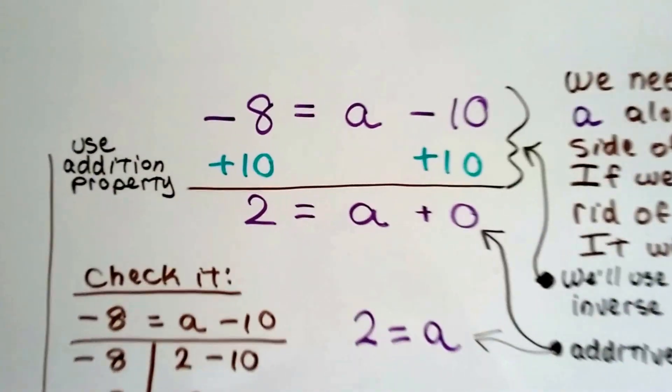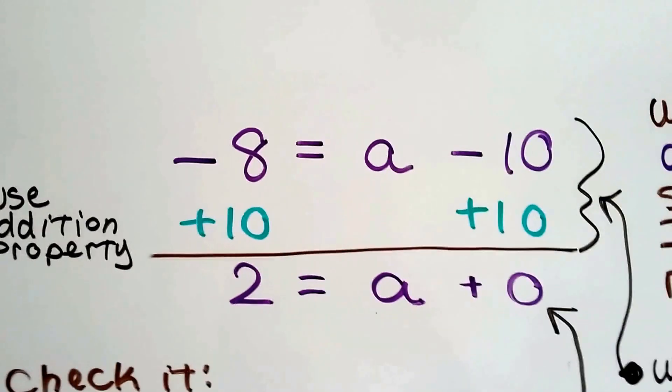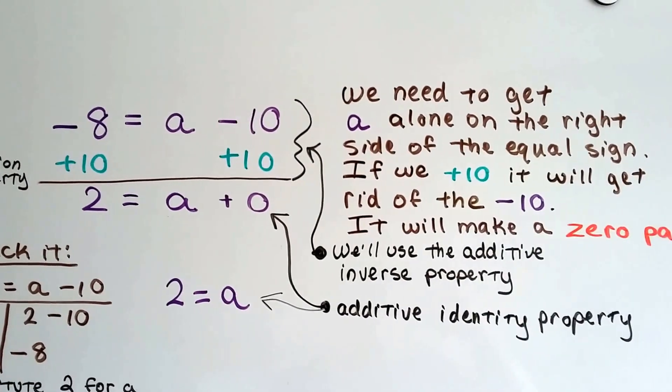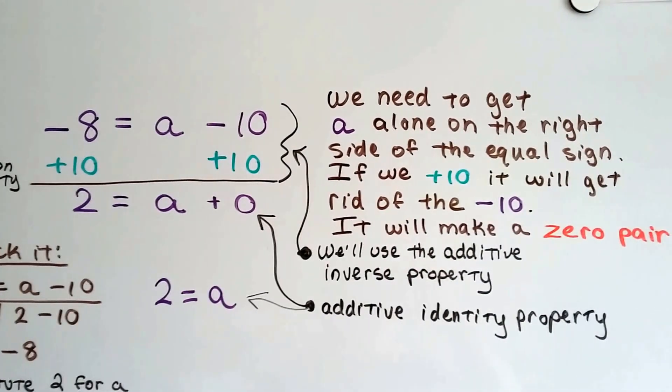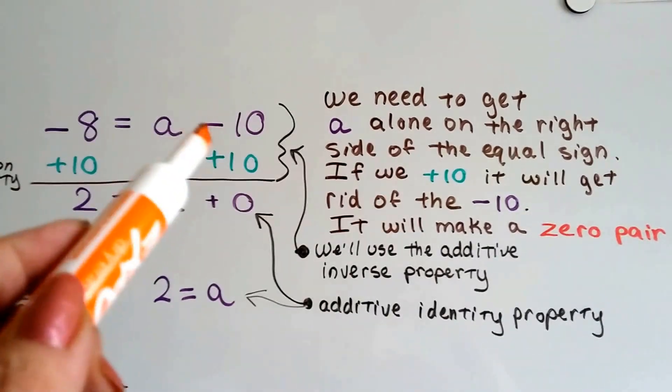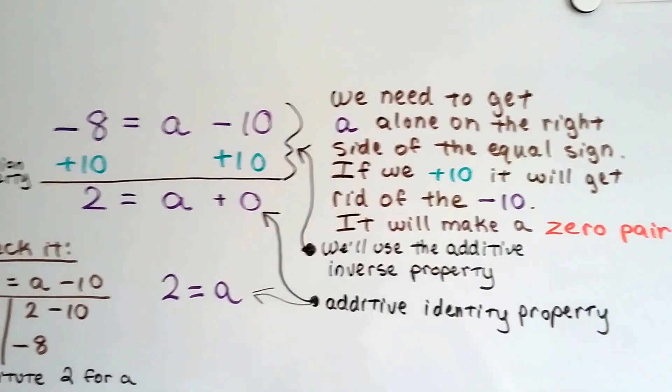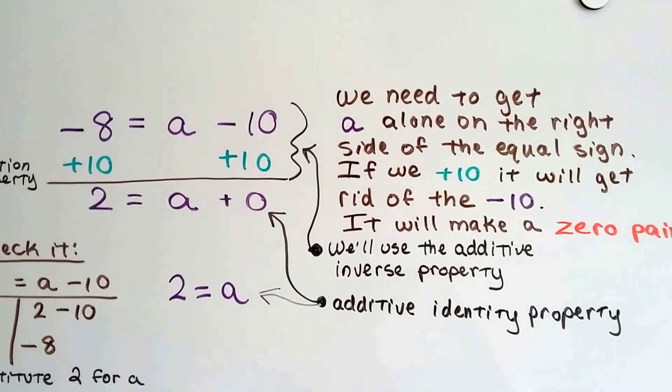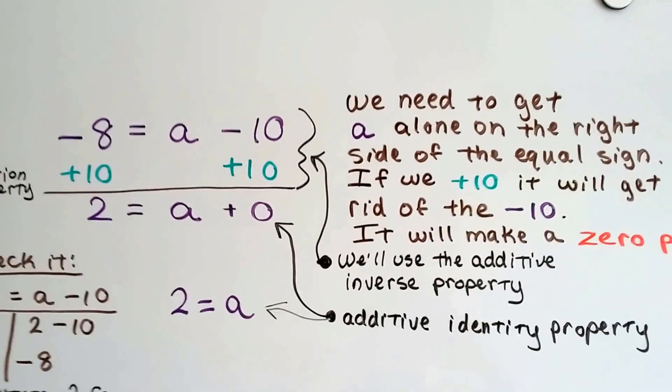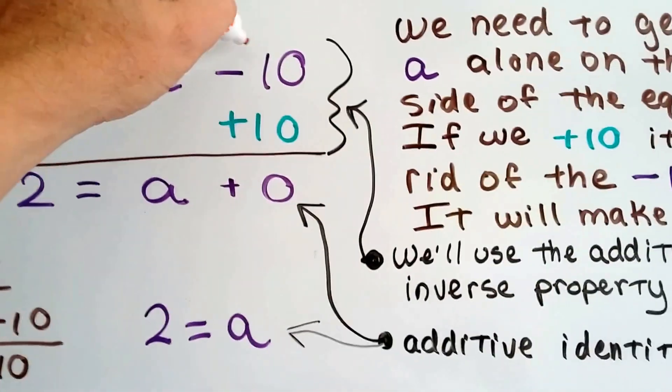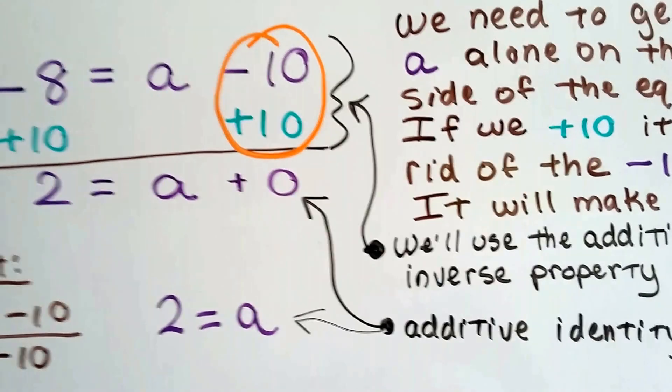Let's try this again. Now we've got negative 8 equals a minus 10. Well, we can use the addition property again. We need to get a alone on the right side of the equal sign now. It's on the right side. And if we add 10, we'll get rid of the negative 10, and we'll make that zero pair again. We'll use the additive inverse property. A negative 10 and a positive 10 is going to make a zero. Right? That makes a zero pair.